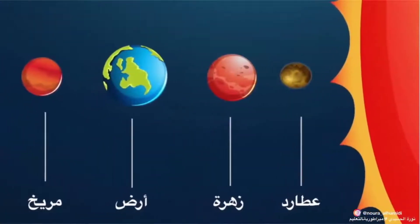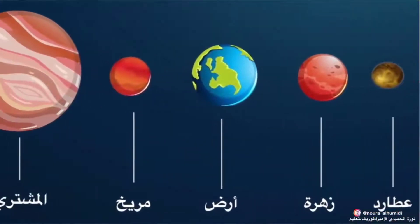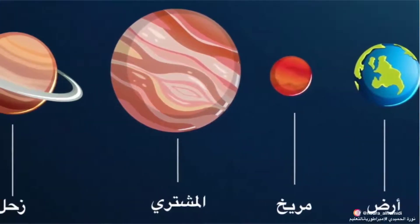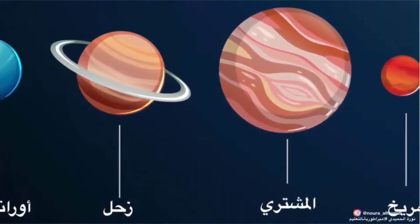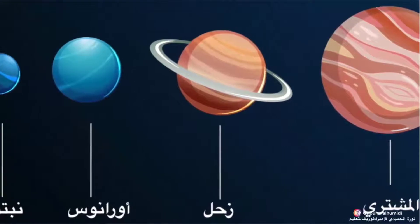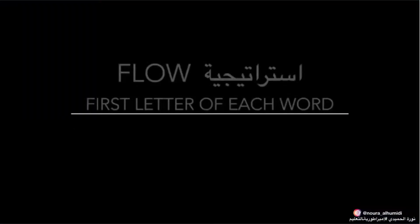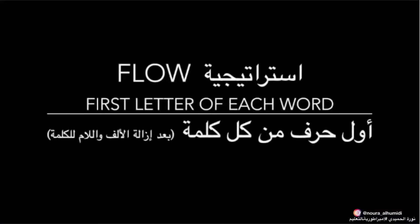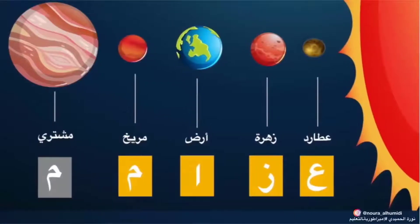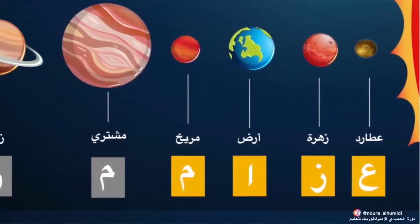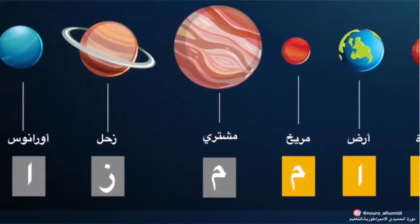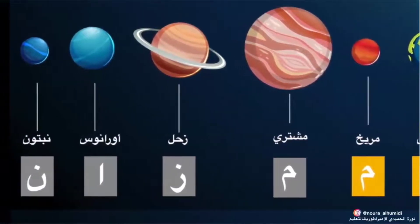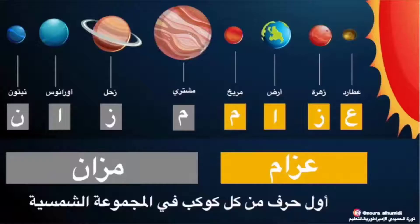كيف تتذكر أسماء جميع الكواكب الثمانية في المجموعة الشمسية؟ إليك هذه الفكرة: استراتيجية فلو. أول حرف من كل كلمة هو أول حرف من كل كوكب: عين، زاي، ألف، ميم، ميم، زاي، ألف، نون — لتصبح كلمة السر: عزام مزان.